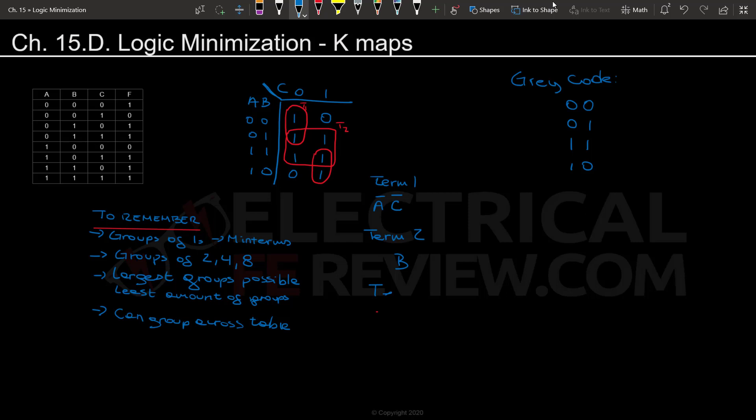And then finally term three, which will be our last group right down here on the bottom right corner. As you can see C will stay the same. And A will stay the same. So it's a very similar situation as term one. However the naught values change. So we will have A and C.